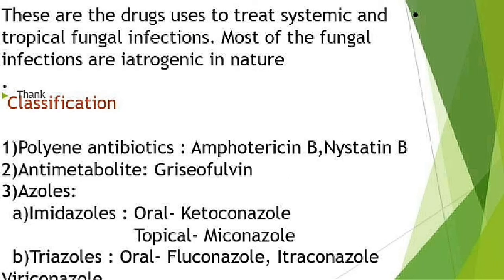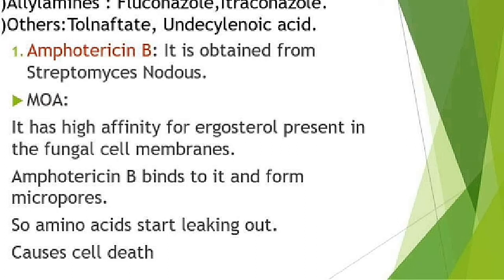The chemical classification includes: first, polyene antibiotics — example, amphotericin B and nystatin; second, anti-metabolites — example, griseofulvin; third, azoles, which have two types: imidazoles — example, ketoconazole and miconazole — and triazoles — example, fluconazole and voriconazole. Next we have allylamines, and lastly others.